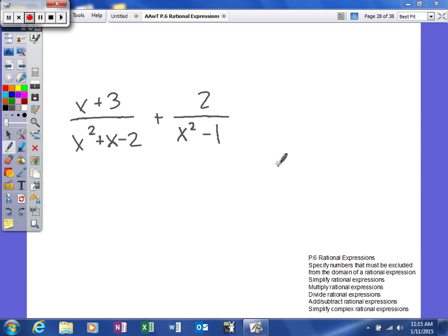Alright, we'll do one more example of this right here. We have x plus 3 over x squared plus x minus 2, and then plus 2 over x squared minus 1.